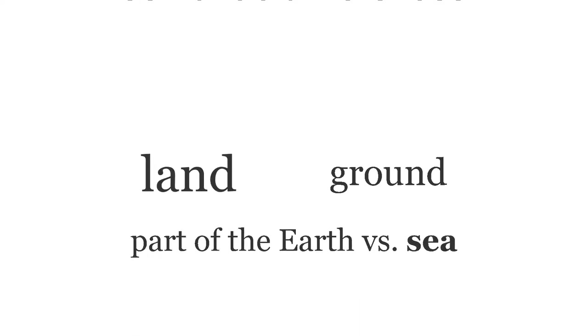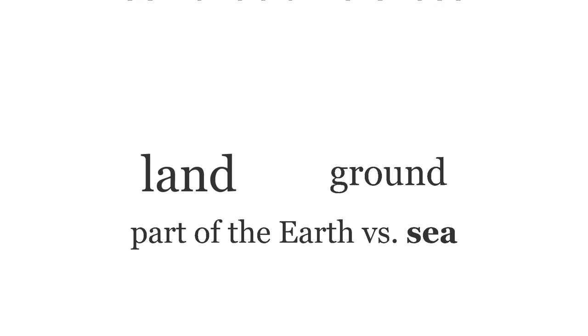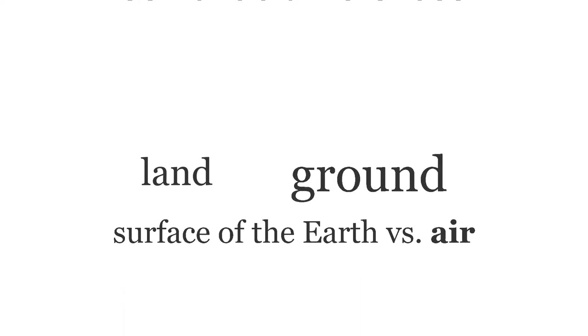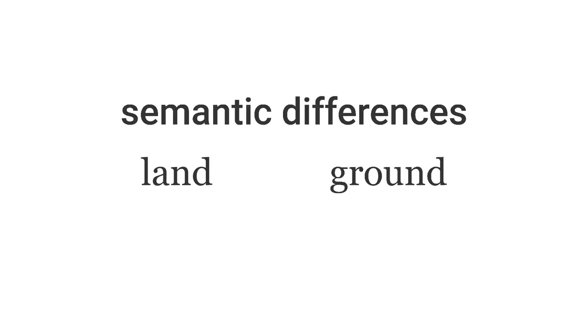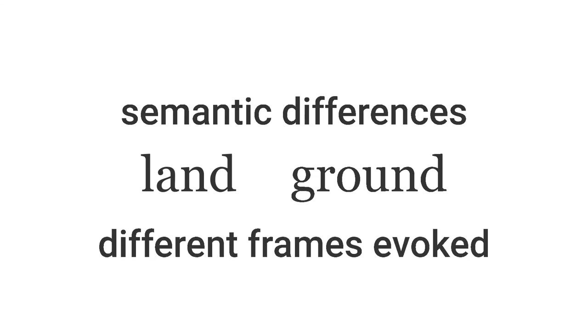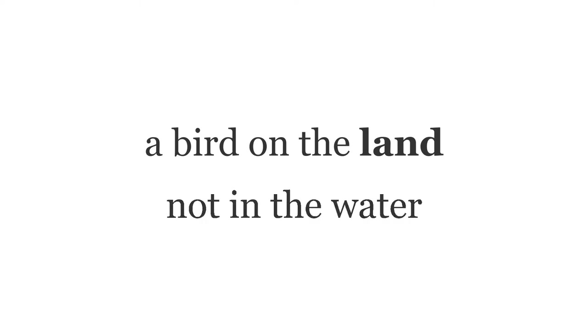Let's think about an example. In English, we have the words land and ground, which can be a bit tricky for non-native speakers. Land designates the part of the earth which is not covered by water, in contrast to the sea. On the other hand, ground designates the surface of the earth in contrast to the air above it. The semantic difference between land and ground is a result of the difference in the frames they evoke. Following Fillmore, if a bird spends its life on the land, we know this bird does not spend any time in the water. On the flip side, a bird that spends its life on the ground is a bird that cannot fly.